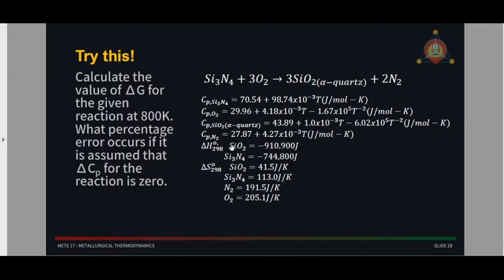I encourage you to try the practice problem: compute delta G for the given reaction at 800 K using the thermodynamic loop, then compare it to the result using the Ulix approximation. You'll notice the percent deviation is very small. Try this on your own and compute the percent deviation.